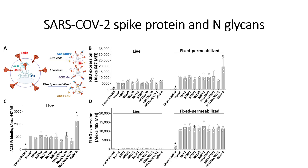They analyzed live cells on the cell surface. The anti-RBD antibody will detect only the S1 side of the spike protein, whereas the Fc antibody detects the whole spike protein, and fixed permeabilized cells with anti-flag detect the S2 part of the spike protein.